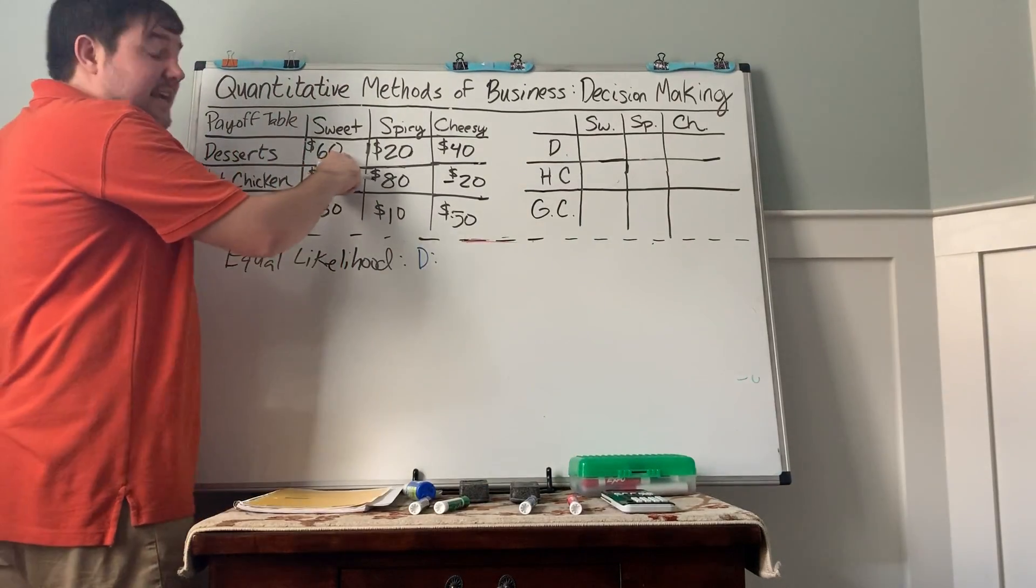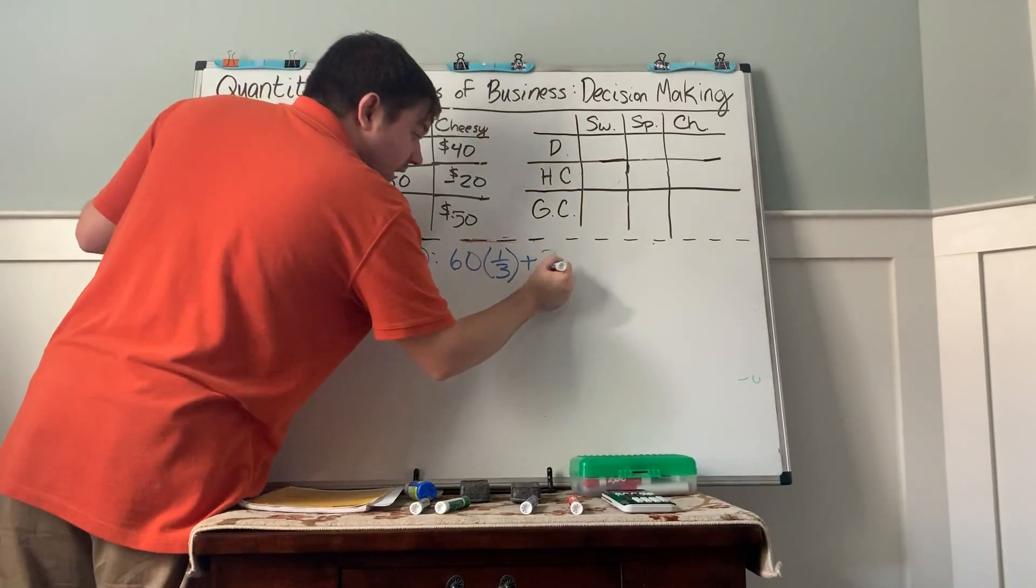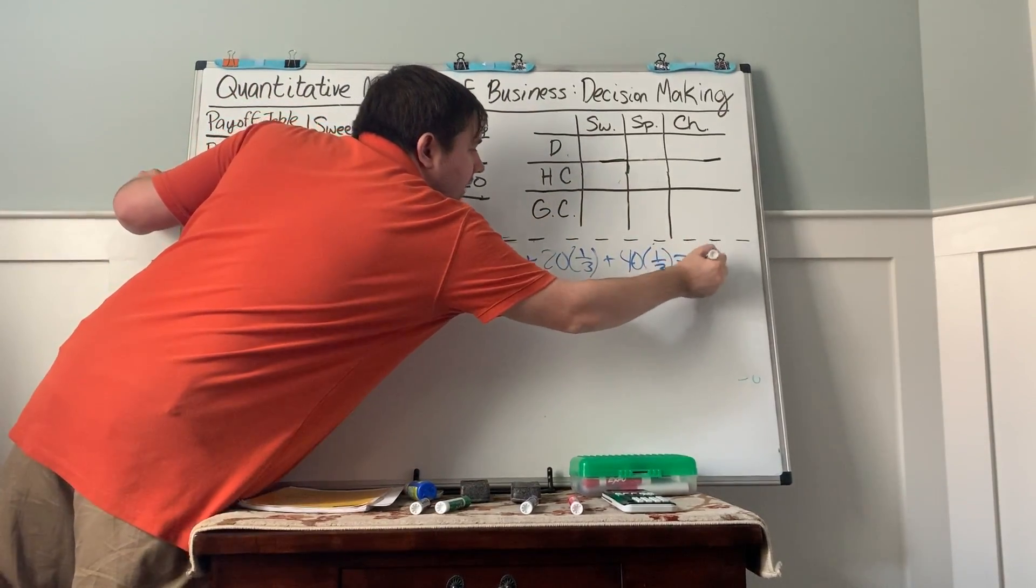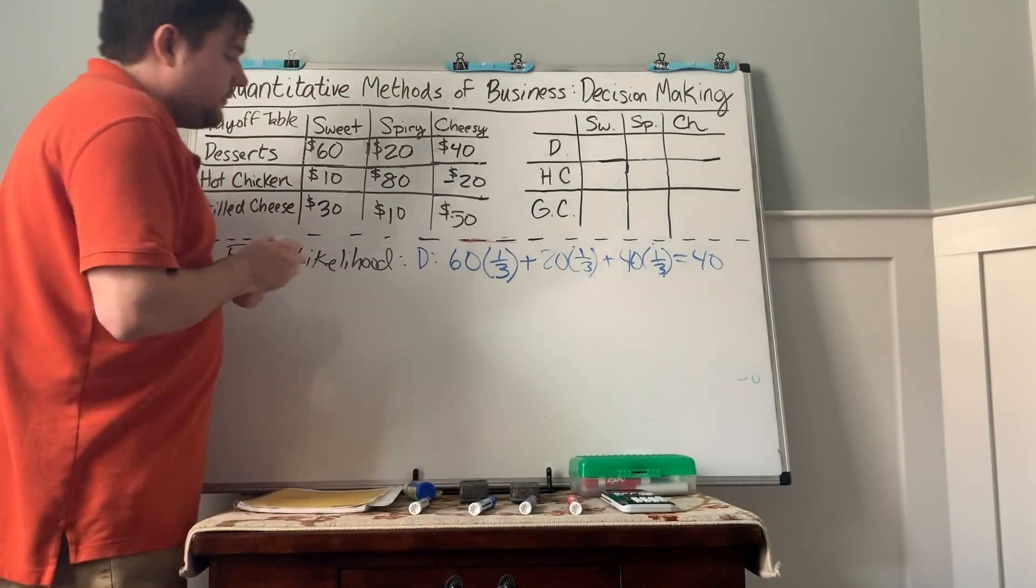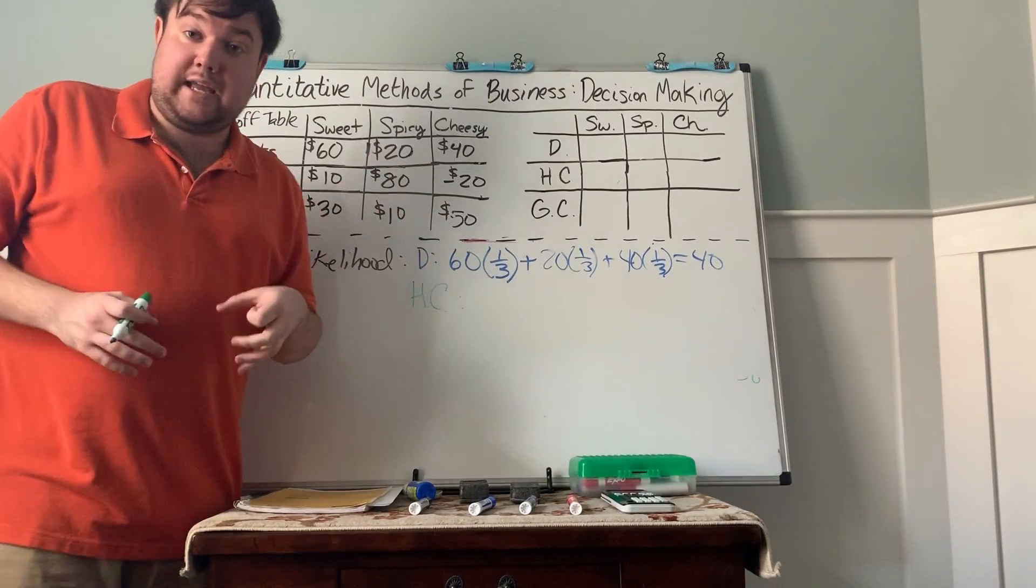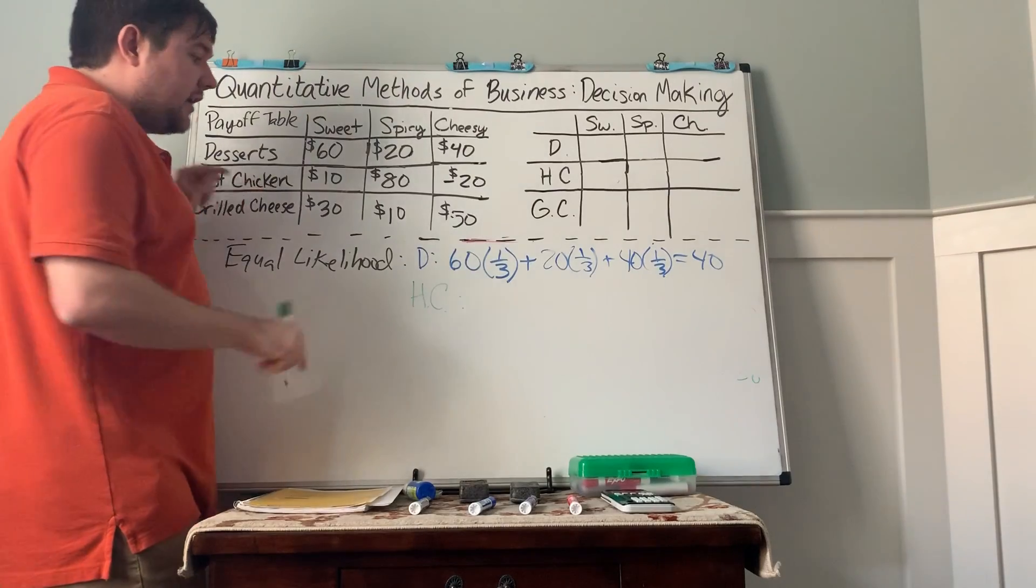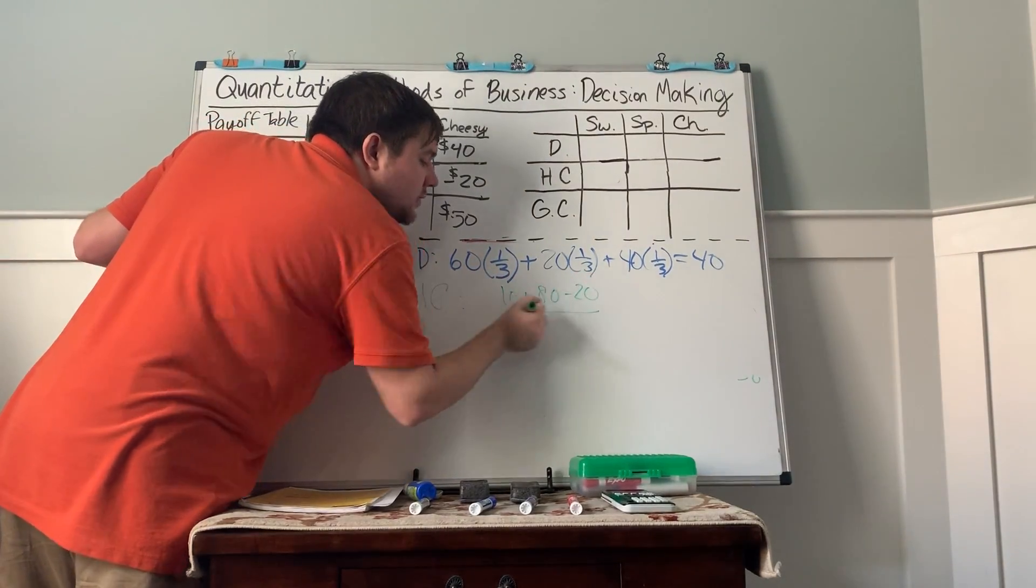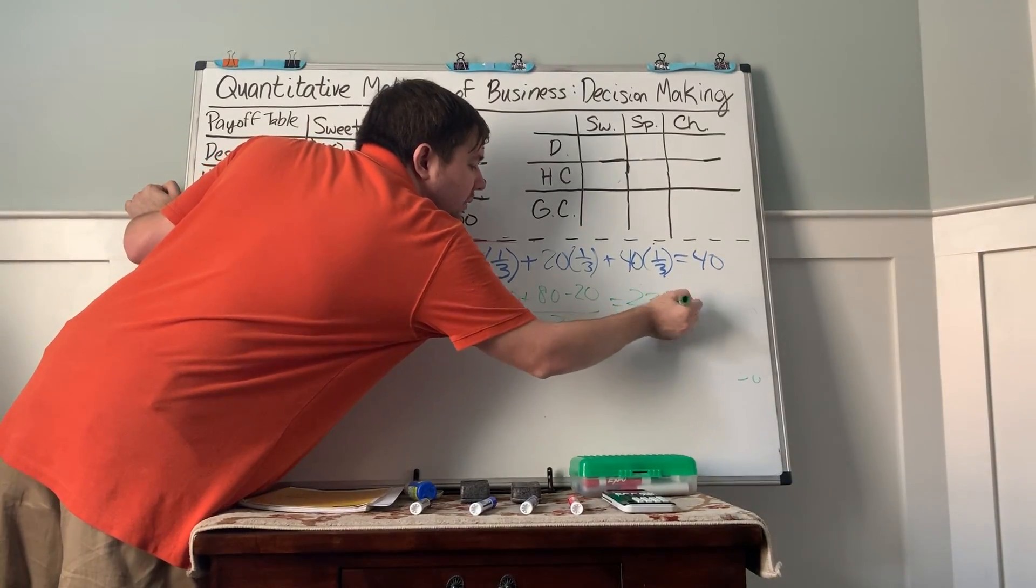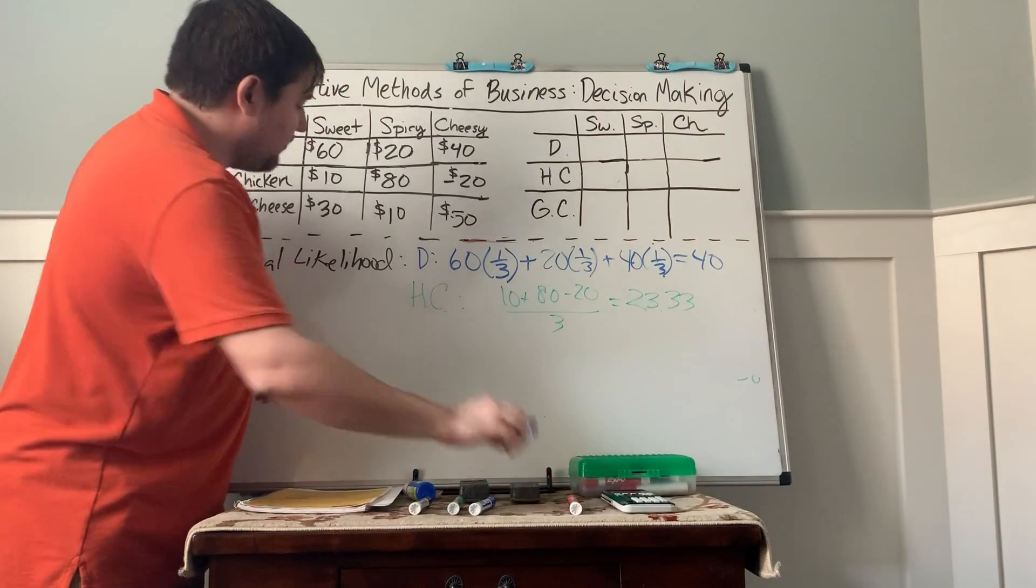And so then we do an expected value problem with those probabilities. So for the dessert, we take the 60 times the probability of getting 60, which is one-third. 20 times the probability of getting it, which is one-third. 40 times one-third. And that ends up giving us $40,000. Now there's actually a trick to this. Instead of doing the one-third, one-third, one-third, an easier way is just averaging the different payoffs for that business decision. So for hot chicken, we could just take 10 plus 80 minus 20 divided by 3.